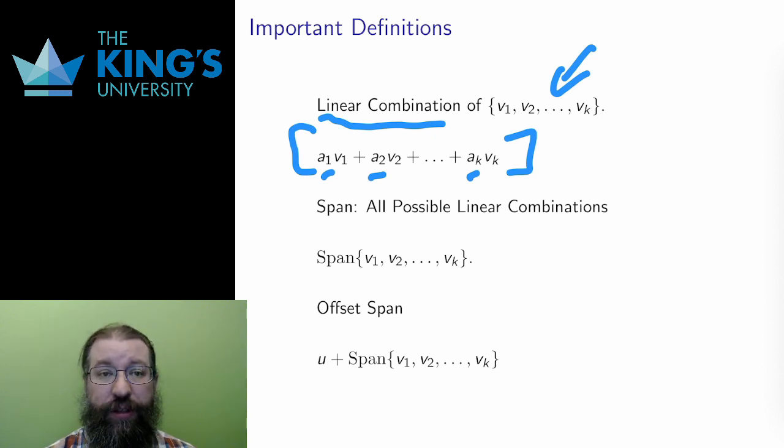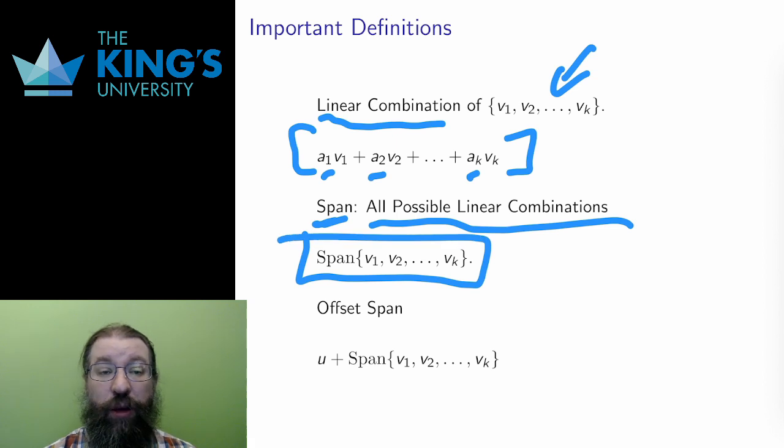Next definition, again starting with a finite set of vectors. The span of the vectors is the set of all possible linear combinations. That is, the a1, a2 constants can be anything. And if I consider all infinitely many possible choices for them and look at all these outcomes, I get the span. It is almost always an infinite set of vectors, since I have infinitely many choices for the constants. The vectors vi, though, are fixed here. This is the span of a fixed set of vectors with arbitrary choices of constants.